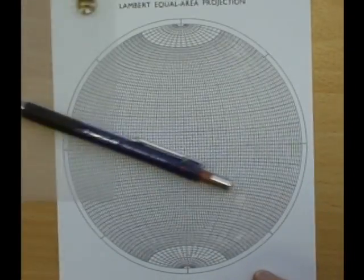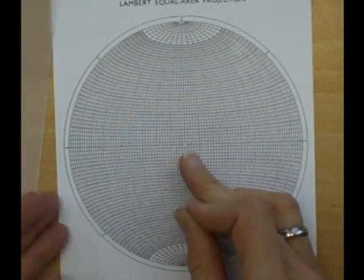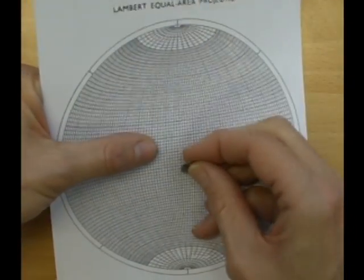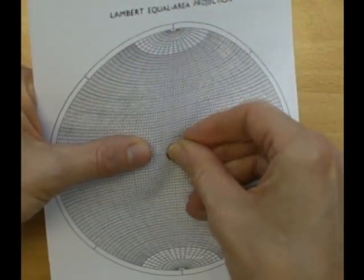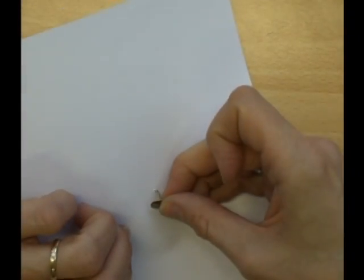The drawing pin needs to go through the exact centre of the StereoNet and the easiest way to do this is to push the drawing pin through from the front before taking it out again and pushing it through from the back.